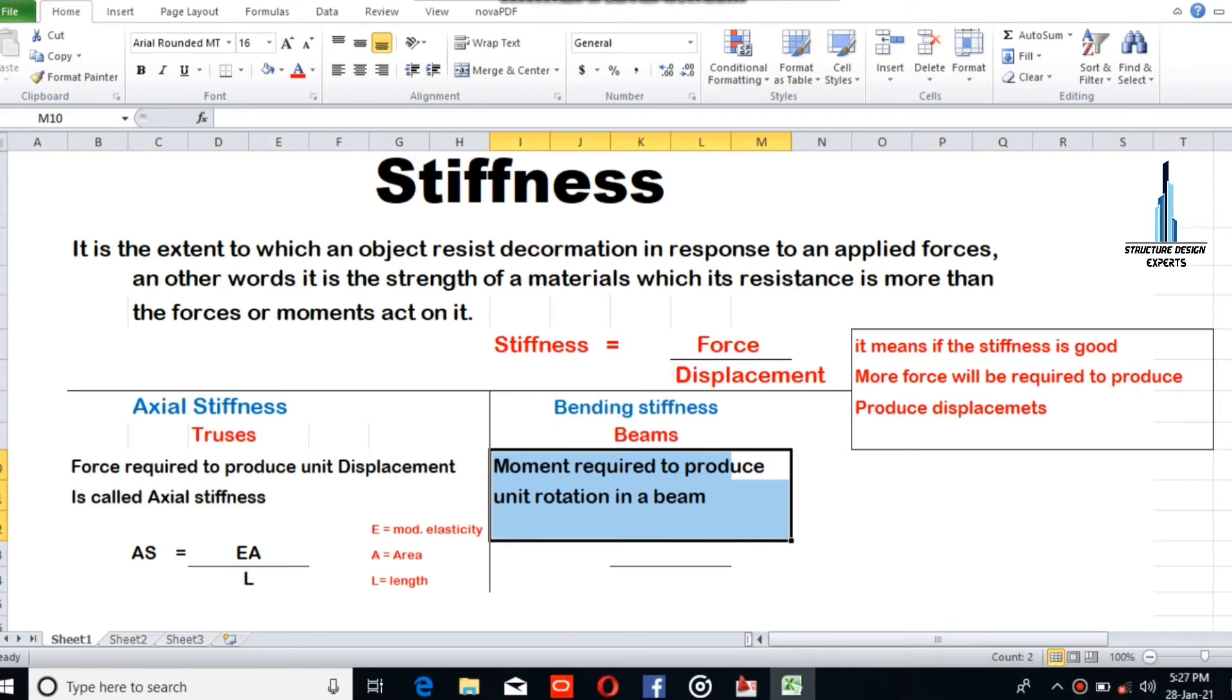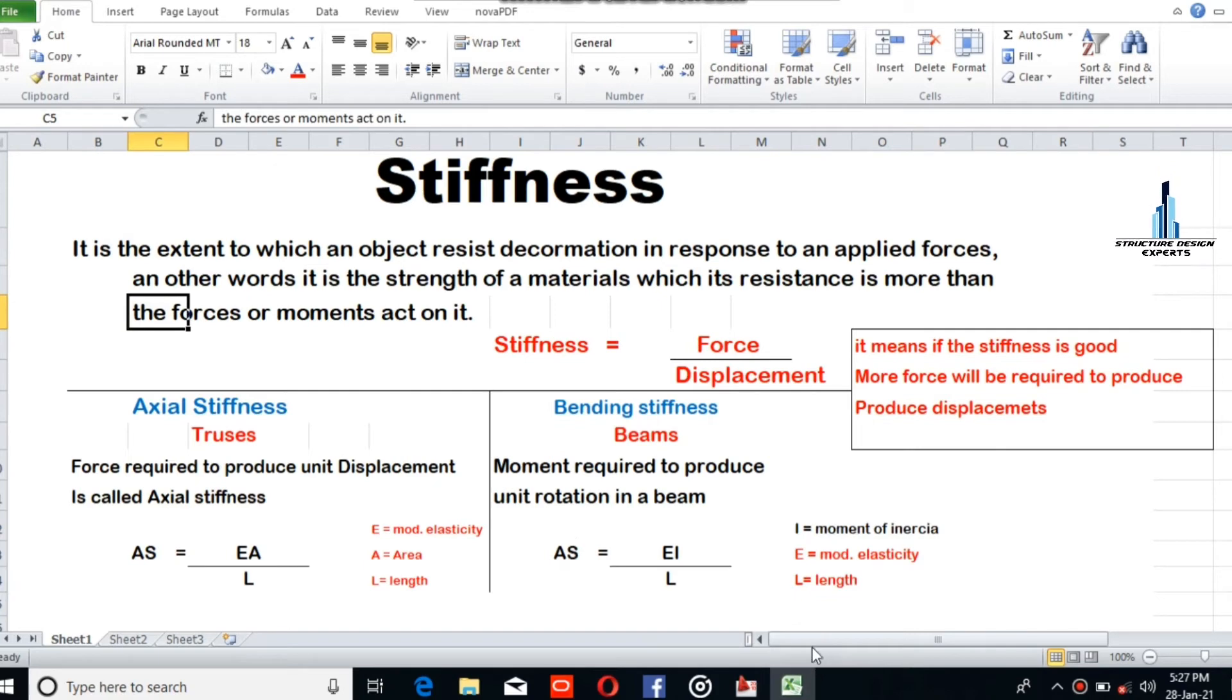Bending stiffness is the moment required to produce unit rotation in a beam, so BS = EI/L, where I is the moment of inertia. To recap the formulas: axial stiffness AS = EA/L, and bending stiffness BS = EI/L.